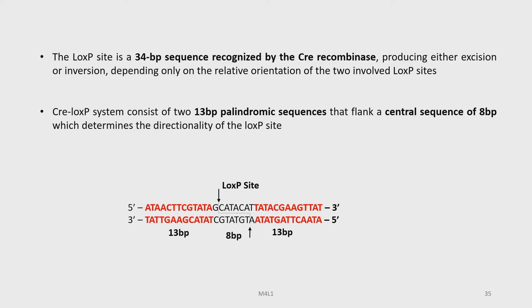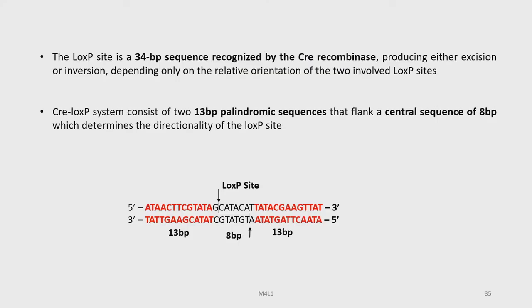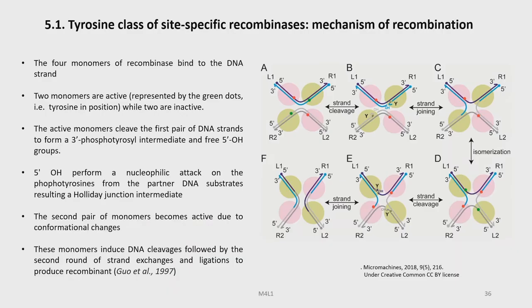The Cre recombinase is a 38 kilodalton protein which can perform efficient recombination at LoxP sites in eukaryotic cells. The LoxP site is a 34 base pair sequence recognized by the Cre recombinase, producing either excision or inversion depending on the relative orientation of the two LoxP sites. The Cre-LoxP system consists of two 13 base pair palindromic sequences flanking a central sequence of 8 base pairs, which determines the directionality of the LoxP system.